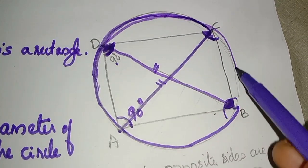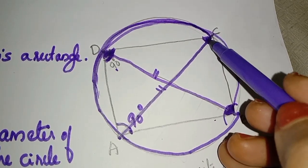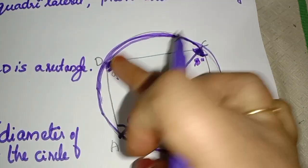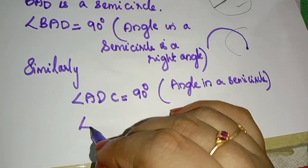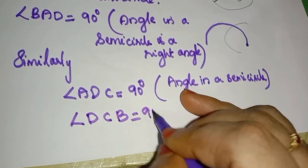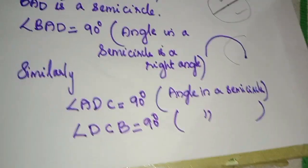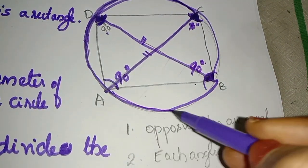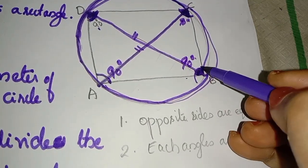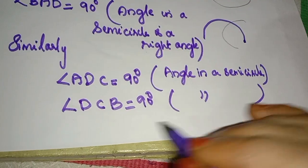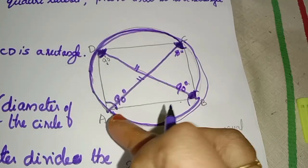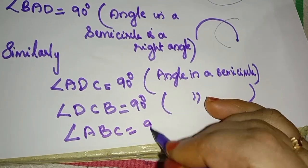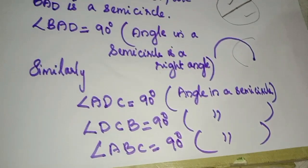Arc DCB is a semicircle, angle is equal to 90 degrees; reason: angle in a semicircle. AC is the diameter of this semicircle and the angle is 90 degrees. Angle ABC is equal to 90 degrees; reason: angle in a semicircle.